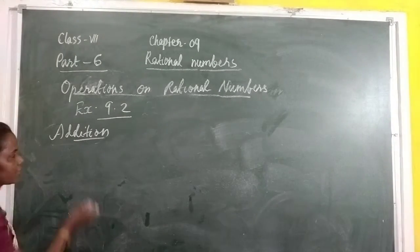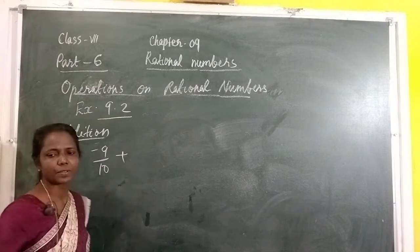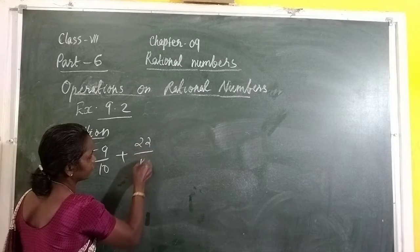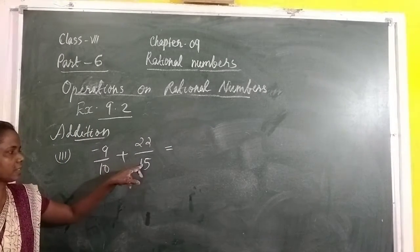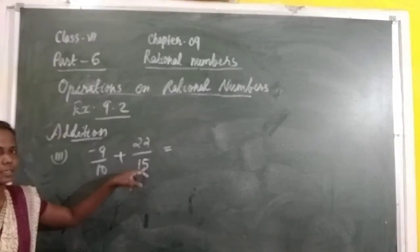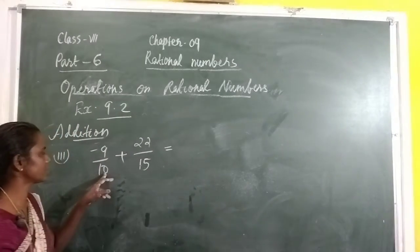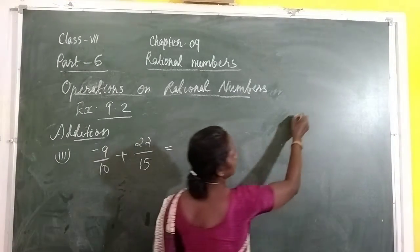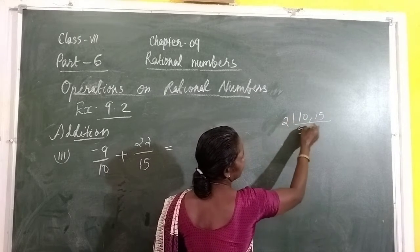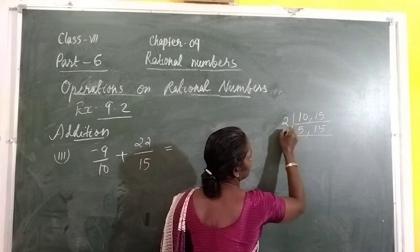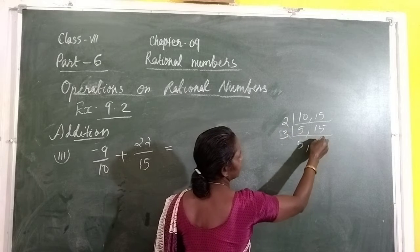Third question: negative 9/10 plus 22/50. Here also, we can use the cross-multiplication method — first rational number multiplied by second's denominator and second rational number multiplied by first's denominator — or we can find the LCM. What is the LCM of 10 and 50?